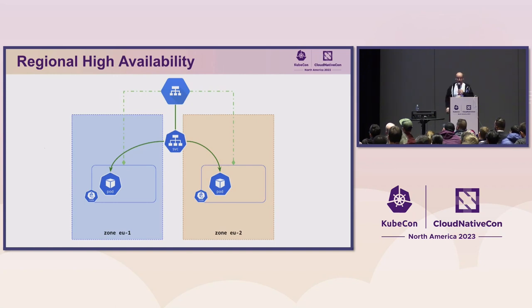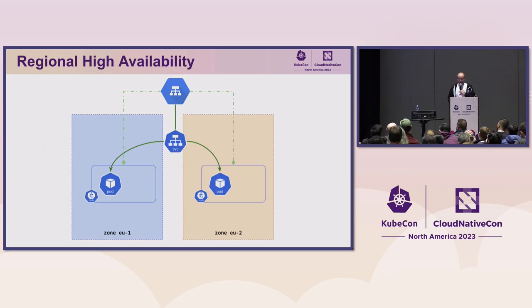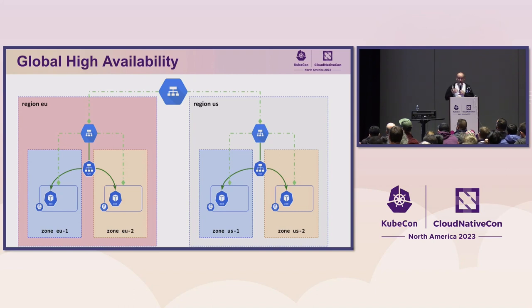Another application is regional high availability. Imagine your application needs to run in a region and be available across different countries. A typical setup is different clusters or nodes in different zones, with a regional load balancer in front of them. If one data center goes down, the load balancer detects it and forwards traffic to the other. This can be chained further — if your failure domain needs to be global, you keep chaining load balancers for worldwide availability.